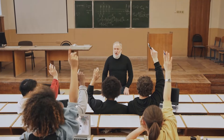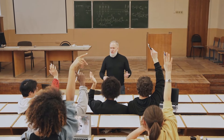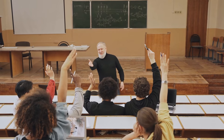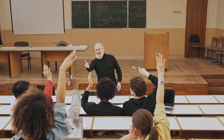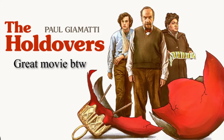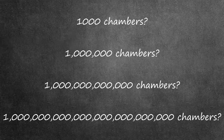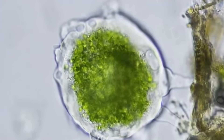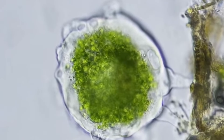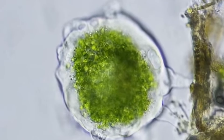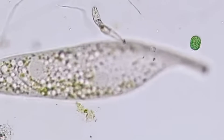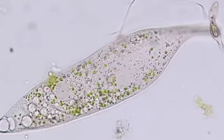At this point, the low probability of failure and the high reward would persuade significantly more people to play. But what about the holdouts? Now what if we increased the number of chambers to a thousand? A million? A trillion? One septillion? Eventually, the chance of failure would become so infinitesimally small that virtually everyone on the planet would be inclined to play.